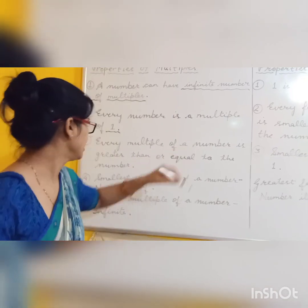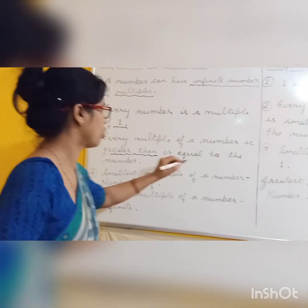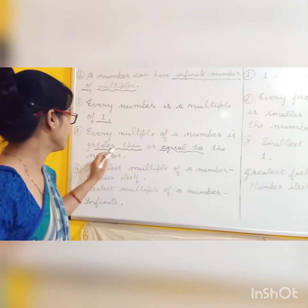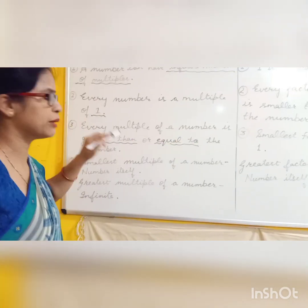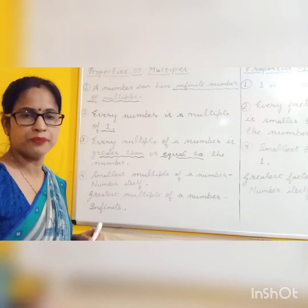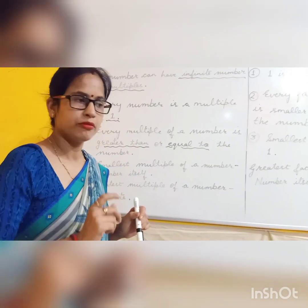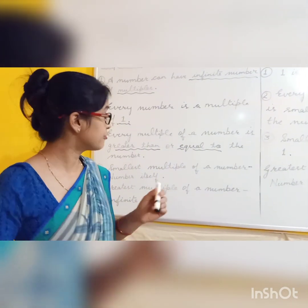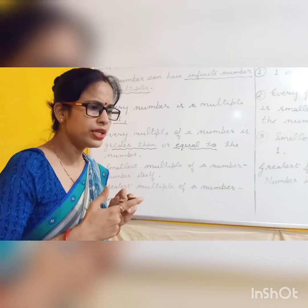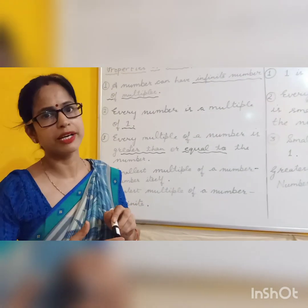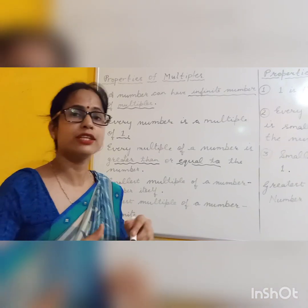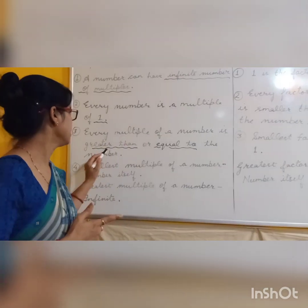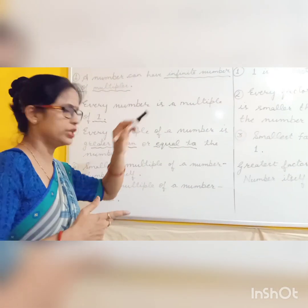Every multiple of a number is greater than or equal to the number. For example, multiples of 5 start from 5 — 5 ones are 5, 5 twos are 10, 5 threes are 15. The smallest, or first, multiple is equal to 5, and the rest of the multiples are greater than 5. So every multiple of a number is greater than or equal to the number.